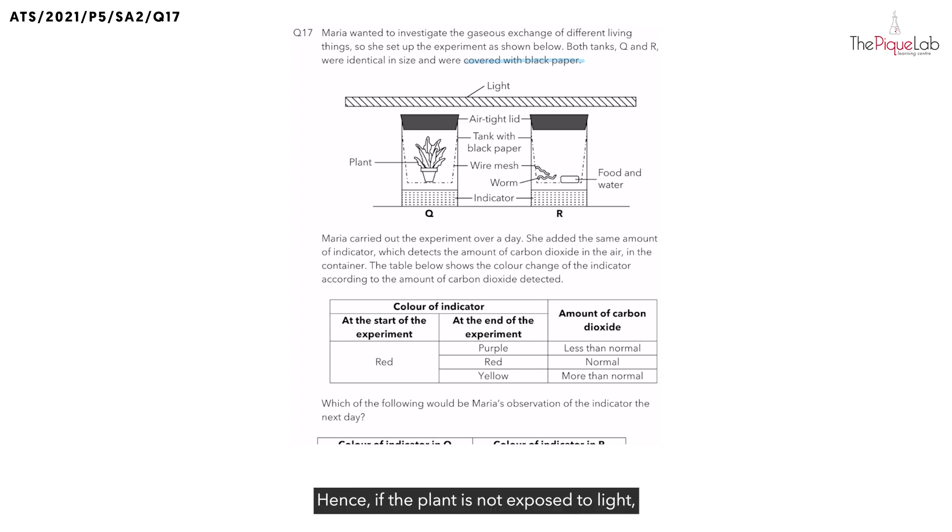Hence, if the plant is not exposed to light, can photosynthesis take place? No. As the plant needs to trap light for photosynthesis, it is unable to carry out the process. Instead, what process is the plant carrying out? It is respiration. For the process of respiration, which gas is taken in by the plant? Oxygen. And which gas is then given out? Carbon dioxide.